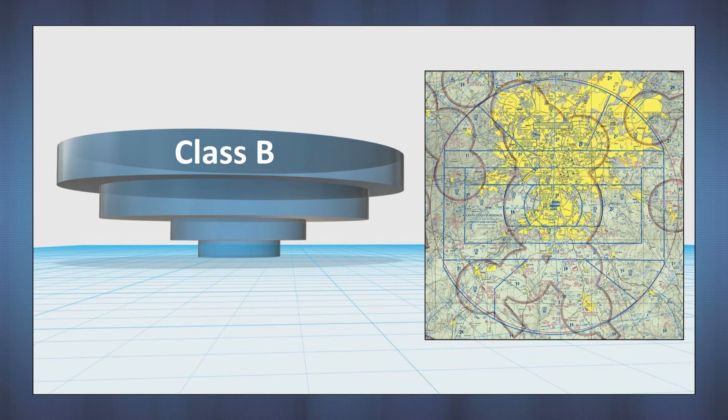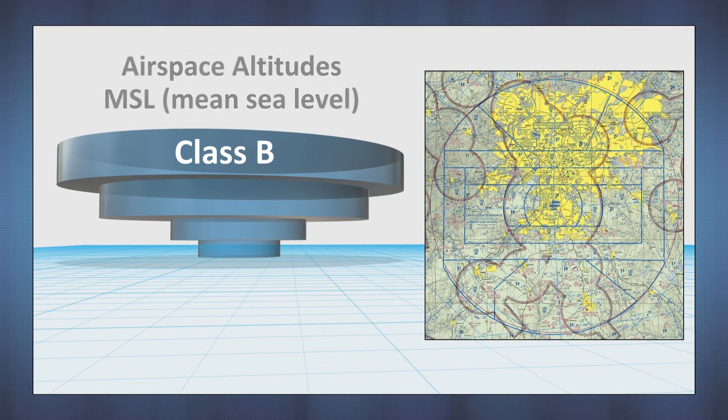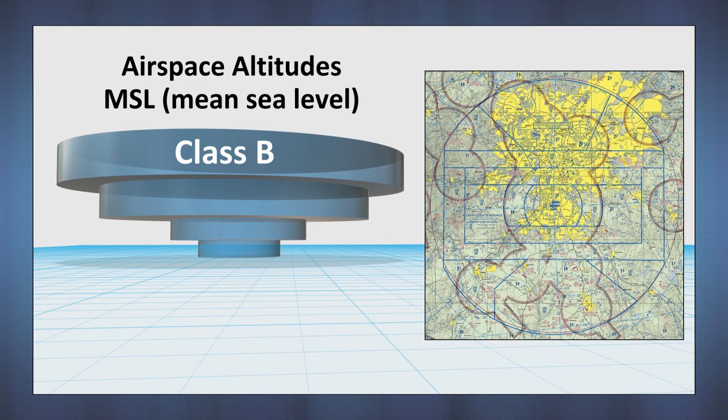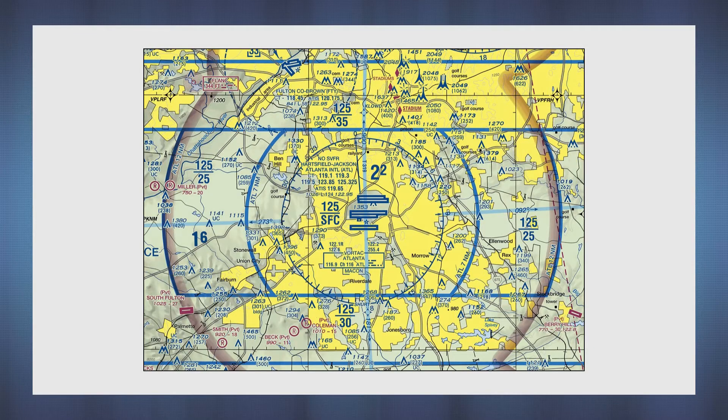Sectional charts are designed for use by aircraft pilots in the air. Their altimeters are calibrated in feet above sea level. So that the charts are readily understandable for them, airspace tops and bottoms are notated in MSL, or feet above mean sea level. The surface area for the Atlantic Class B starts, well, at the surface and extends upward to the top of the airspace at 12,500 feet.